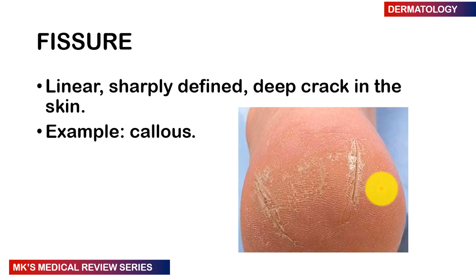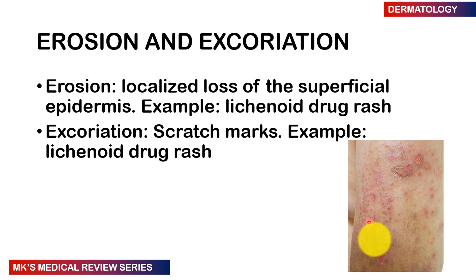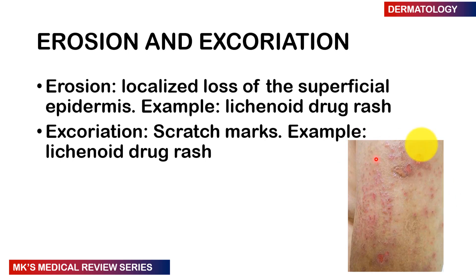A fissure is a linear, sharply defined, deep crack in the skin — an example is a callus, as seen affecting the heel. An erosion is a localized loss of the superficial epidermis. Note the difference from ulcers: ulcers extend into the dermis, while erosions are more superficial. Excoriations are scratch marks. Both erosions and excoriations can be seen in lichenoid drug reactions.